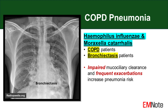Patients with chronic respiratory conditions such as COPD or bronchiectasis are at increased risk for pneumonia caused by specific pathogens. Haemophilus influenzae and Moraxella catarrhalis are frequently implicated in these populations, due to impaired mucociliary clearance, chronic inflammation, and structural changes in the airways.